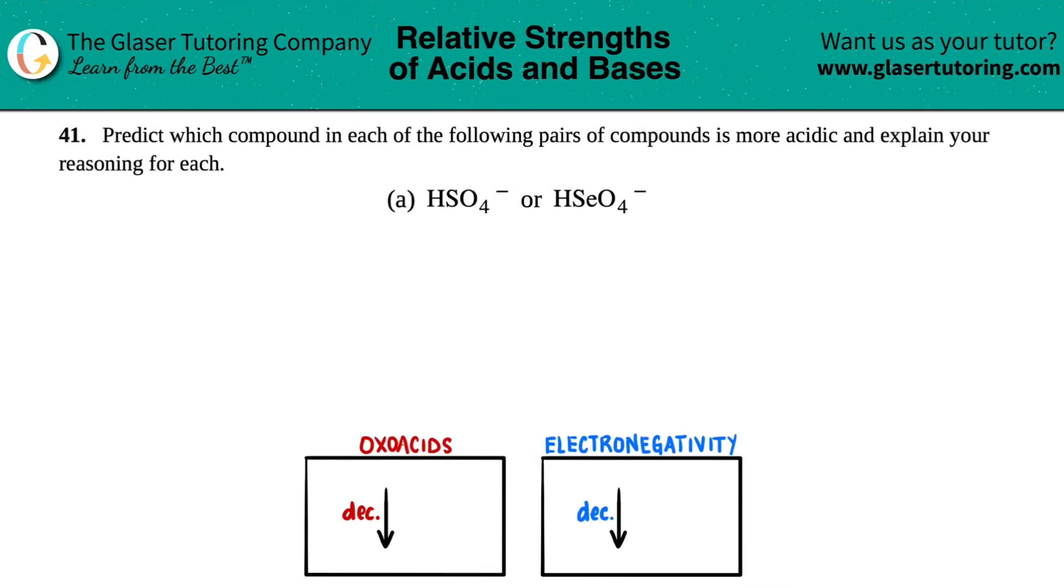Number 41: Predict which compound in each of the following pairs is more acidic and explain your reasoning. For part (a), we have to figure out whether HSO4 minus is more acidic or HSeO4 minus is more acidic. The first thing we need to do is figure out what types of acids these are.